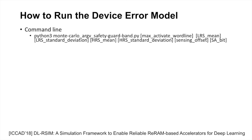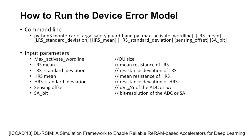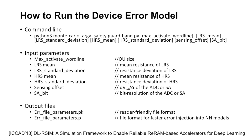Here we show how to run the device error model written in Python. The command line has several input parameters including the OU size, the mean resistance and resistance deviation of low and high resistance states, and the sensing offset and bit resolution of the ADC or SA. Users can adapt these values to analyze the impact of each parameter on error rates and conduct design space exploration. After running the device error model, users will get error rates stored in two file formats: one is reader-friendly, and the other enables faster error injection into neural network models.